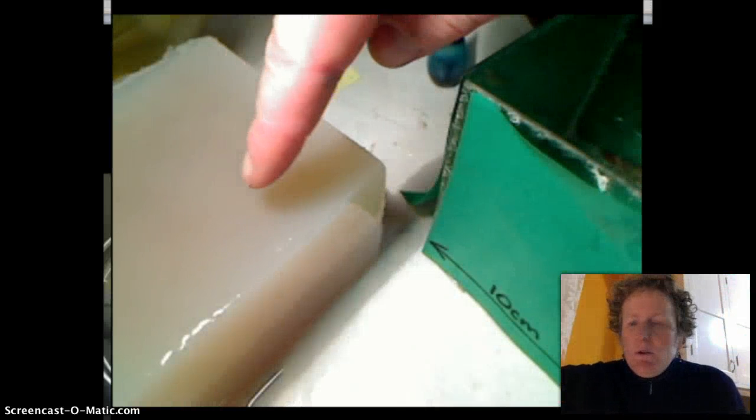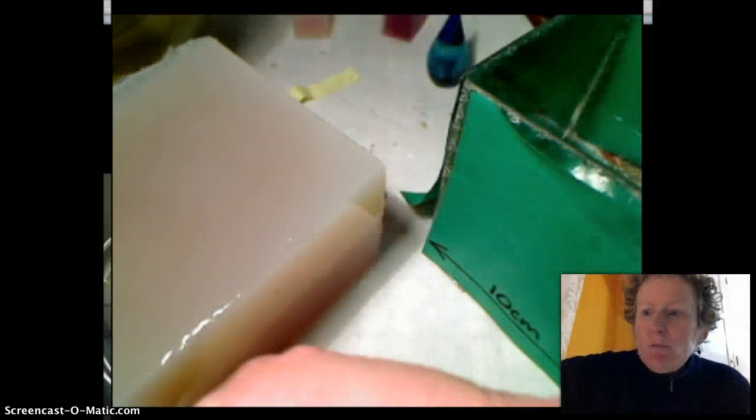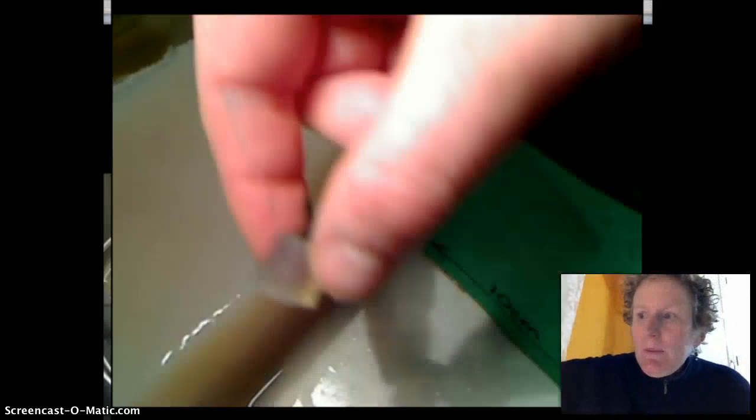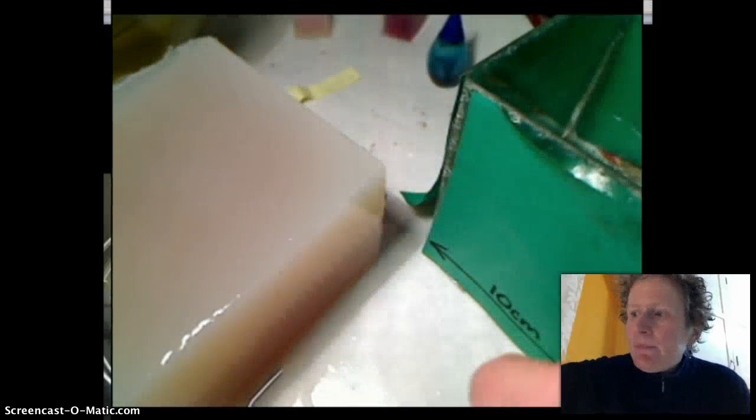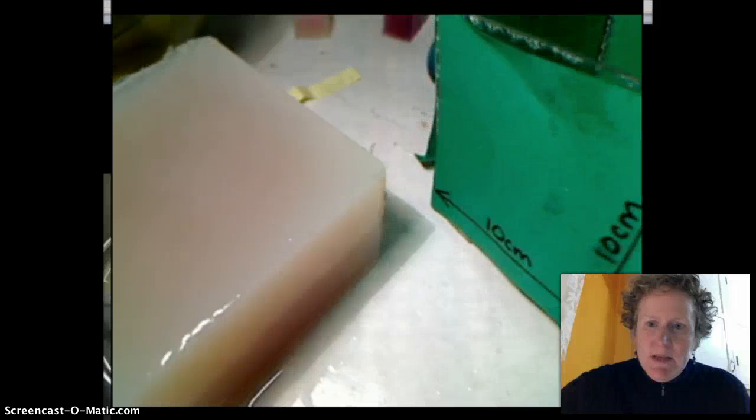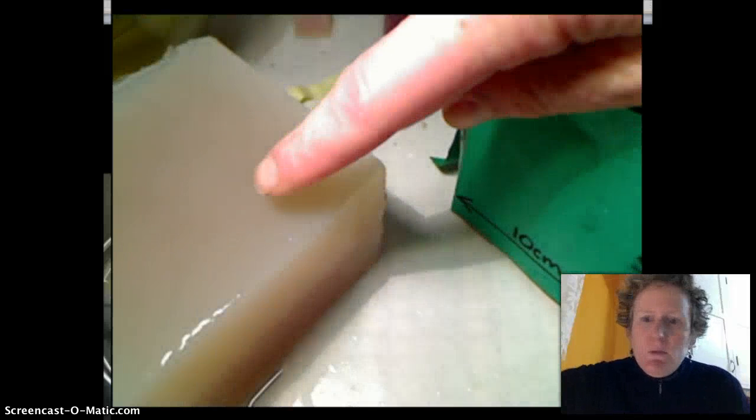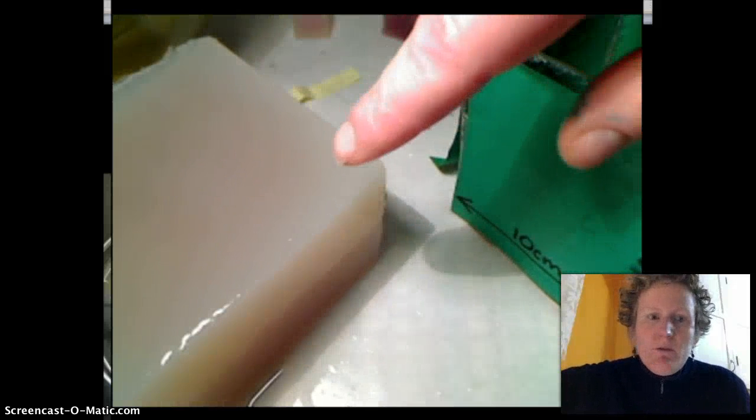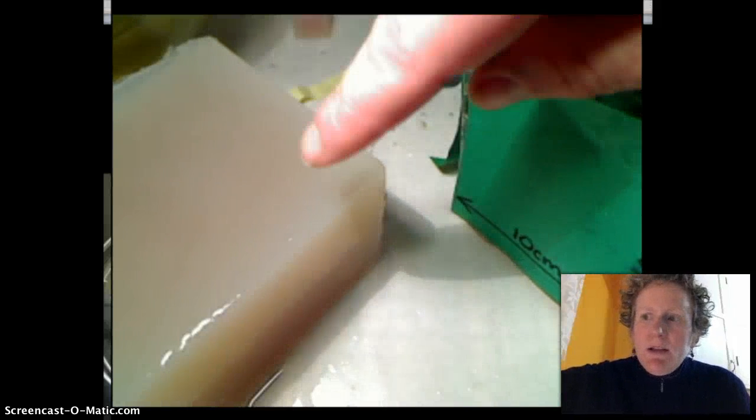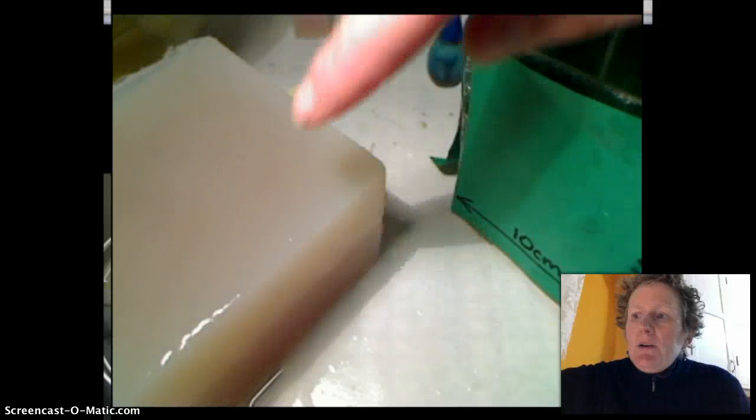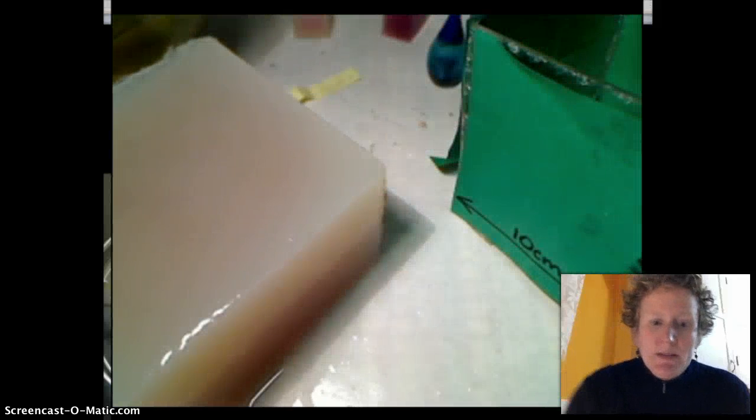This agar cube is big, much bigger than the little cube we just cut open. Here's a little size comparison. It's about the same size as this one. This cube has actually been soaking in vinegar for about 48 hours. Let's cut this one open and see how diffused a really big cell is.